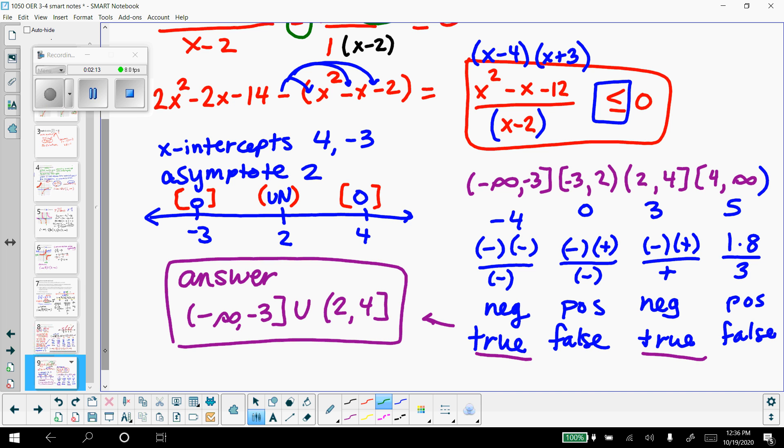I find out that when I plug in negative 4, I get a negative answer, which is less than 0, which is true. When I plug in 0, I get a positive answer, which is greater than 0, so that interval is false.